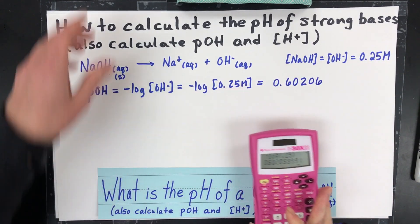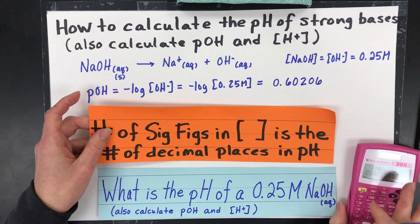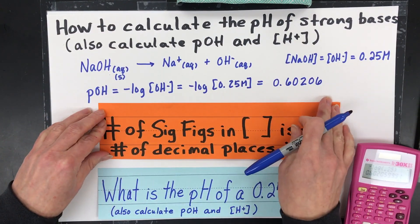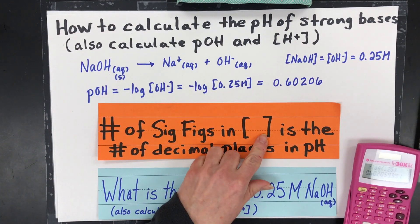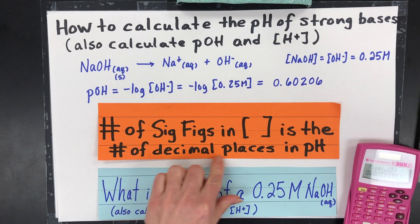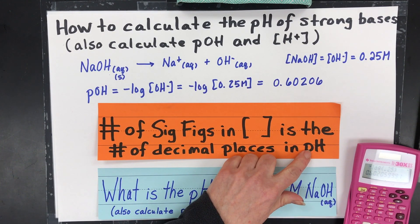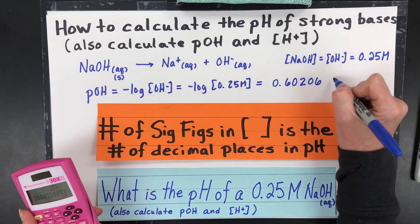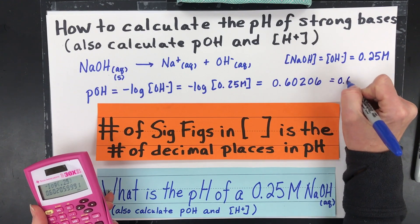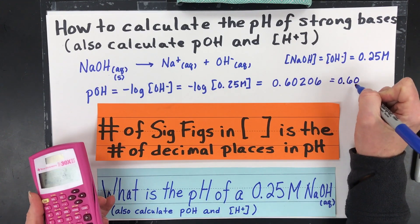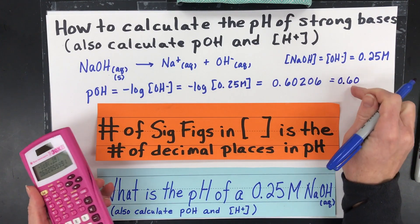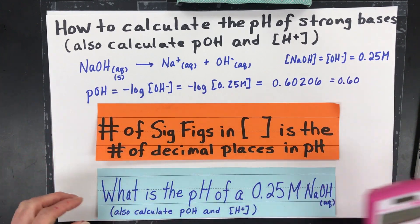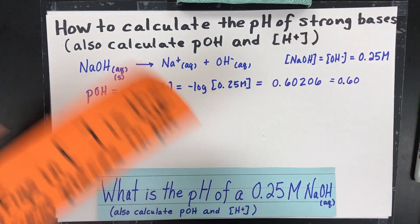I'm going to stop writing. Why? Because we have to follow some significant figure rules that are unique for pH and pOH. So the number of sig figs in the concentration is the number of decimal places in the pH or the pOH. So I had two significant figures in my concentration. I get to keep two decimal places. So 0.60. Don't worry. You might be like, wait, 0.6? You're fine. That's a pOH. We're not there yet.